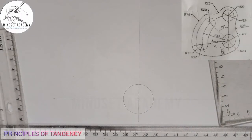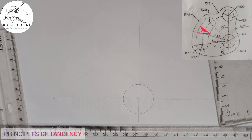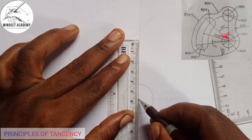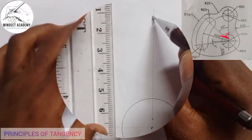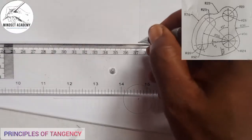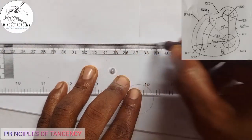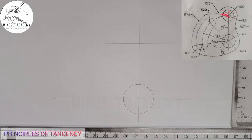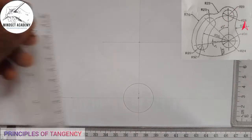The next step is to draw the second circle. We need to find its center. Looking at the diagram, the distance from this center to the next center is 56. I'll measure 56 on my ruler, and with the help of my T-square I'll draw another line to locate that center point. On that point there is another circle.